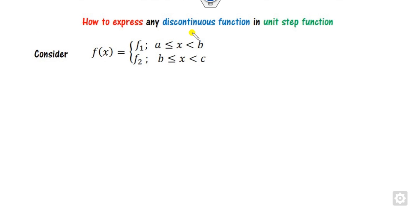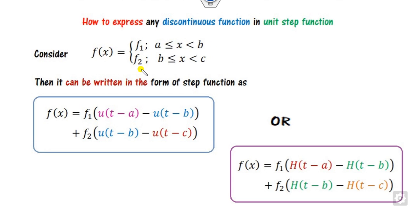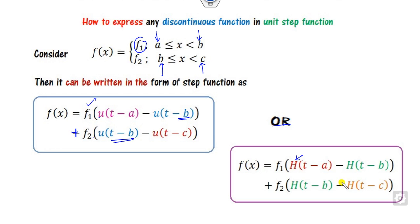Now, how can you express any discontinuous function in terms of the unit step? Say you have a discontinuous function with breakpoints at a, b, and c. Then you can express f₁ times [u(t − a) − u(t − b)] plus f₂ times [u(t − b) − u(t − c)]. Instead of u you can use h — it is the same thing.